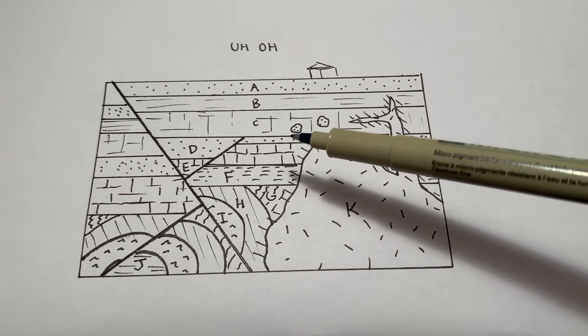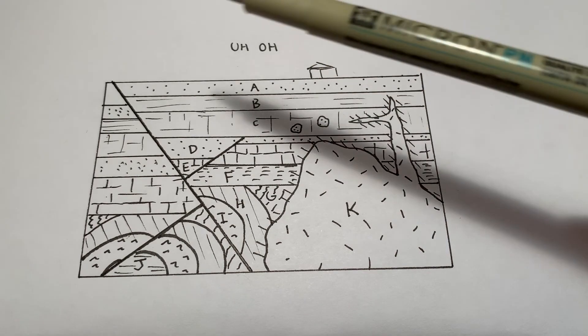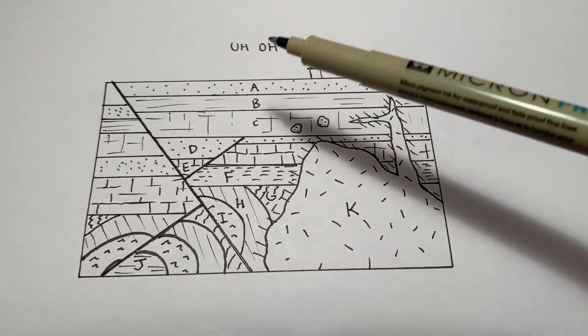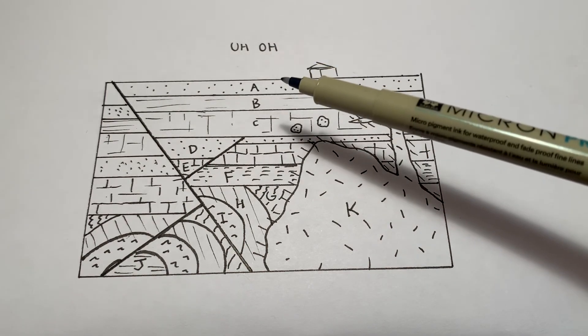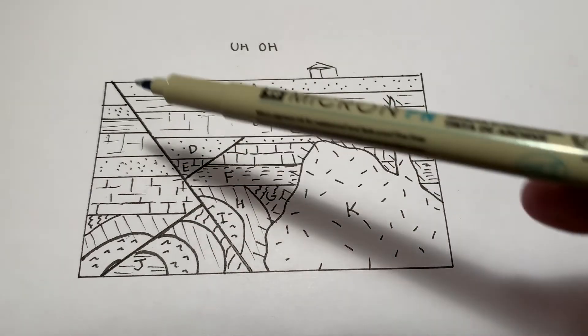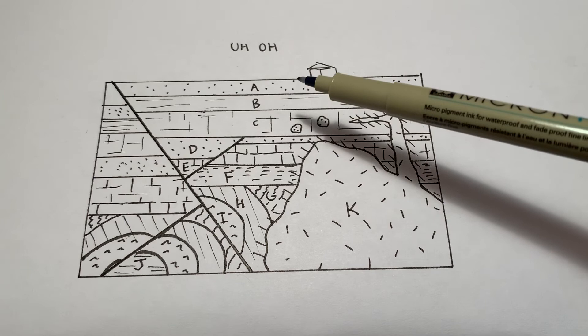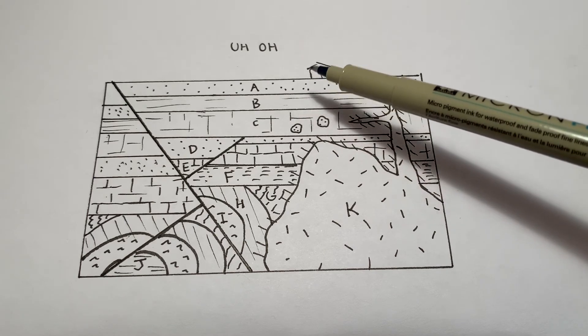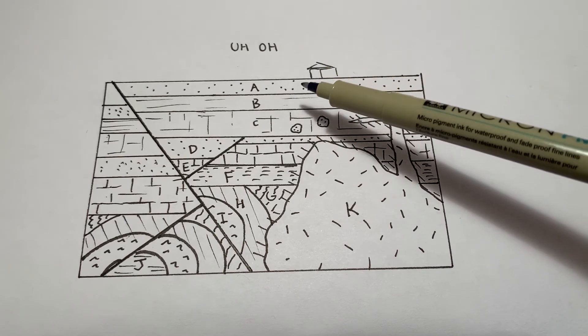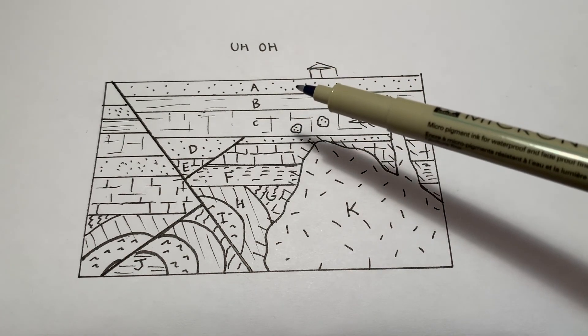But the point is, even in something like this, the principle of superposition is great for your basics. Like, if we just look at the top here, even with the fault cutting it, we'd say, well, A is on top of B, and it looks like there's some faulting here. But it was applied evenly across all the strata. It doesn't look like there's any preferential folding or deformation across any of these. So I can definitely say that A is younger than B, and then B is younger than C, and then C is younger than D. And you can kind of work your way down from there.